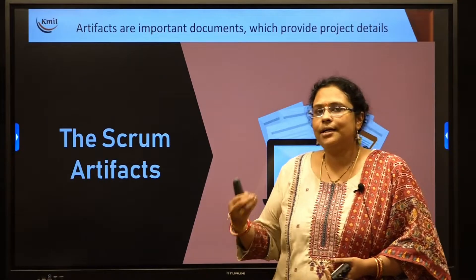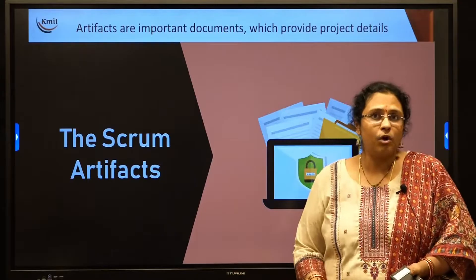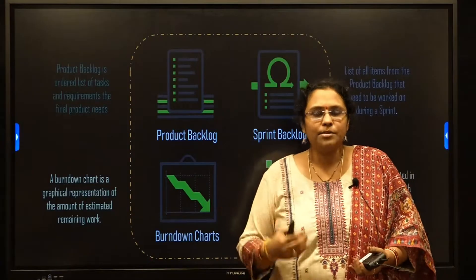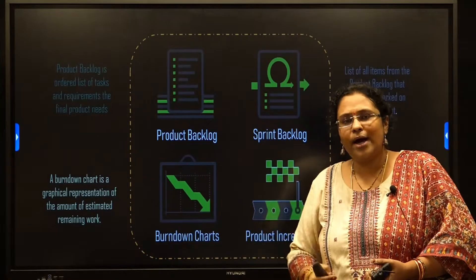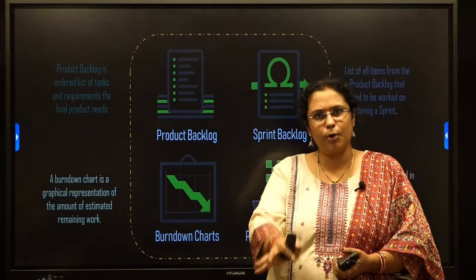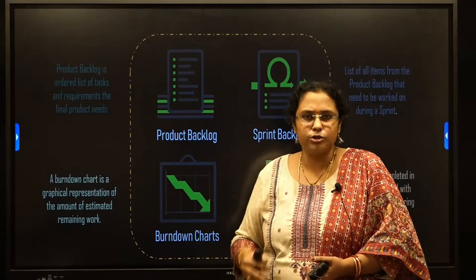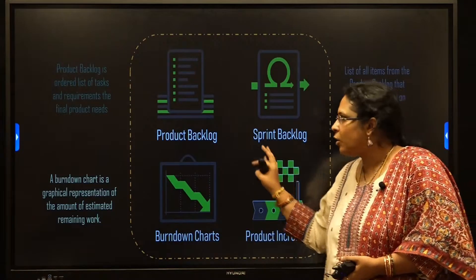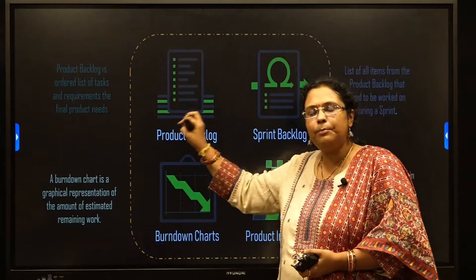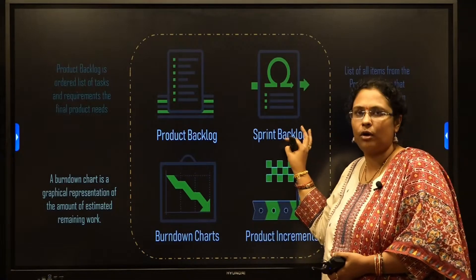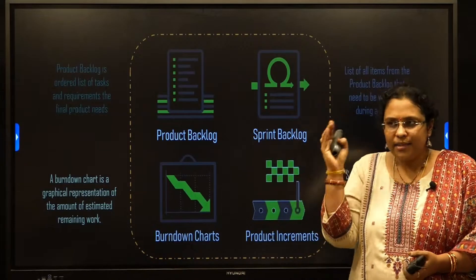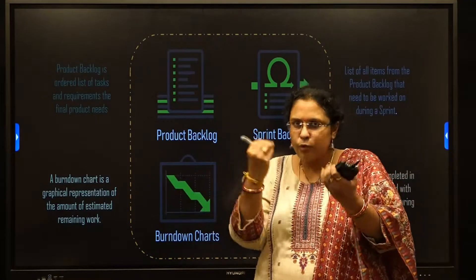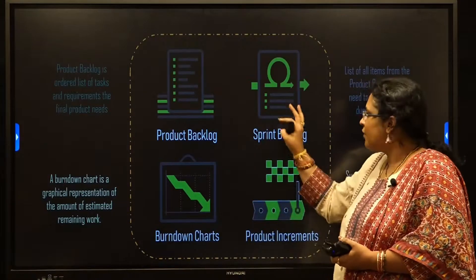Now let us see the artifacts — the documents involved in Scrum. The first document is the Product Backlog, which contains the list of all requirements needed for the project along with their priority numbers. The next artifact is the Sprint Backlog. A few requirements from the Product Backlog are selected and placed into the Sprint Backlog — the list of requirements to be developed within the 14-day sprint, since you cannot develop all requirements in one sprint.